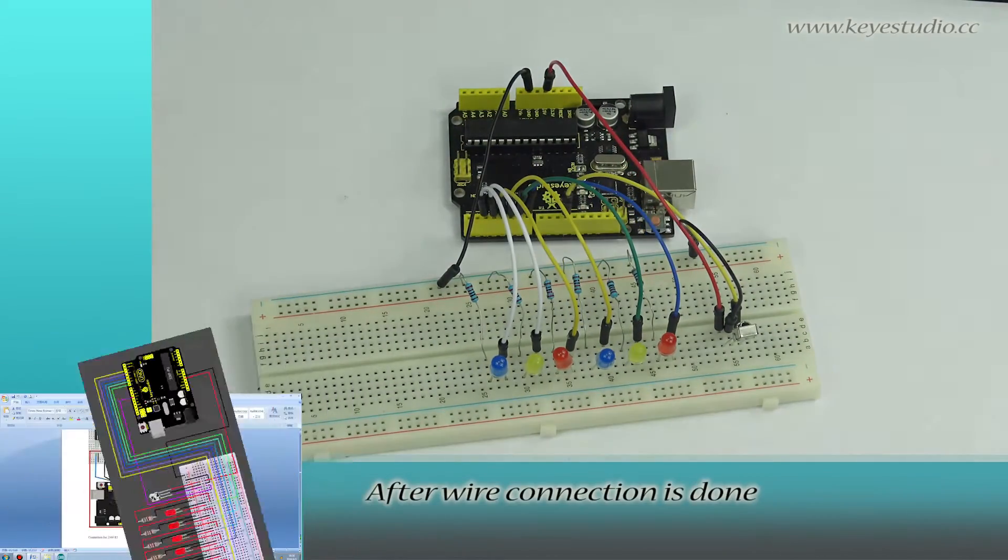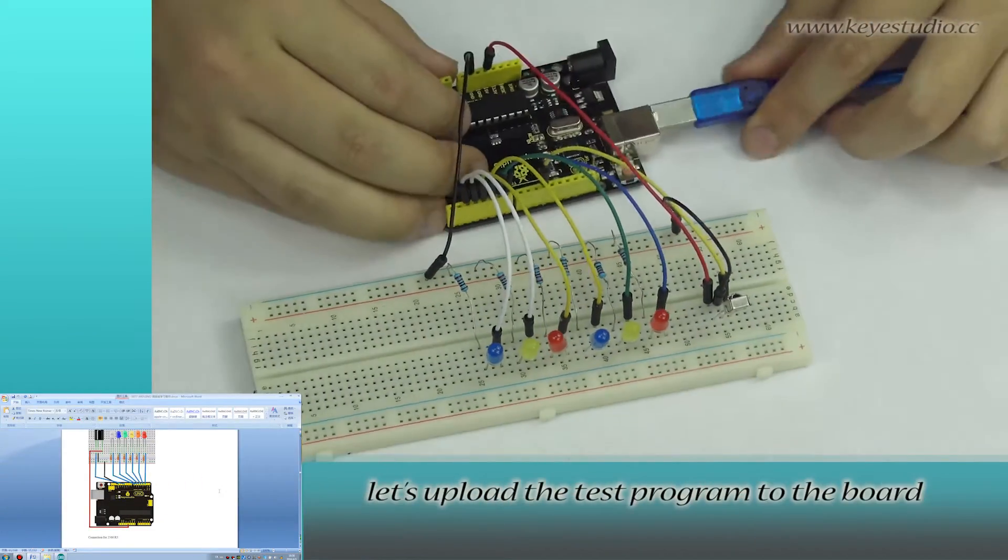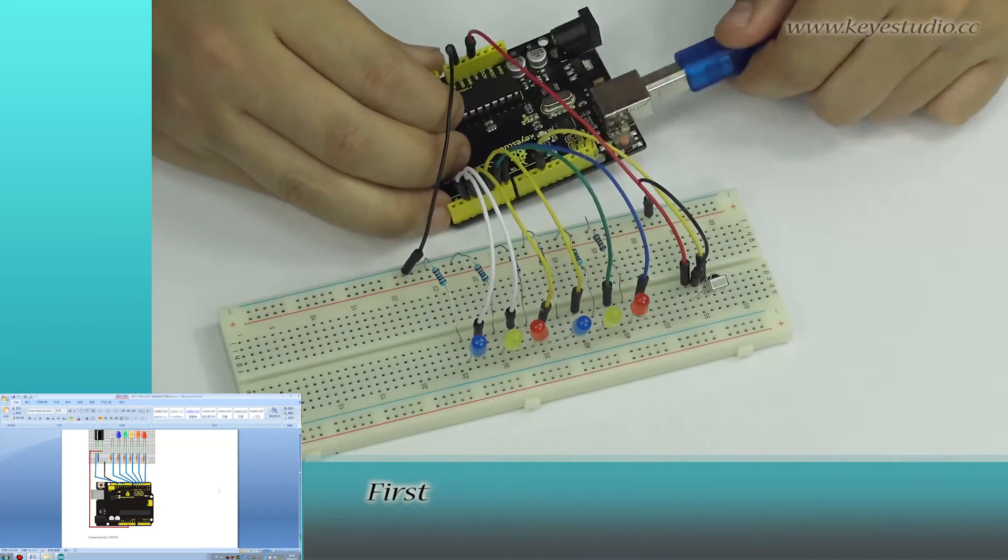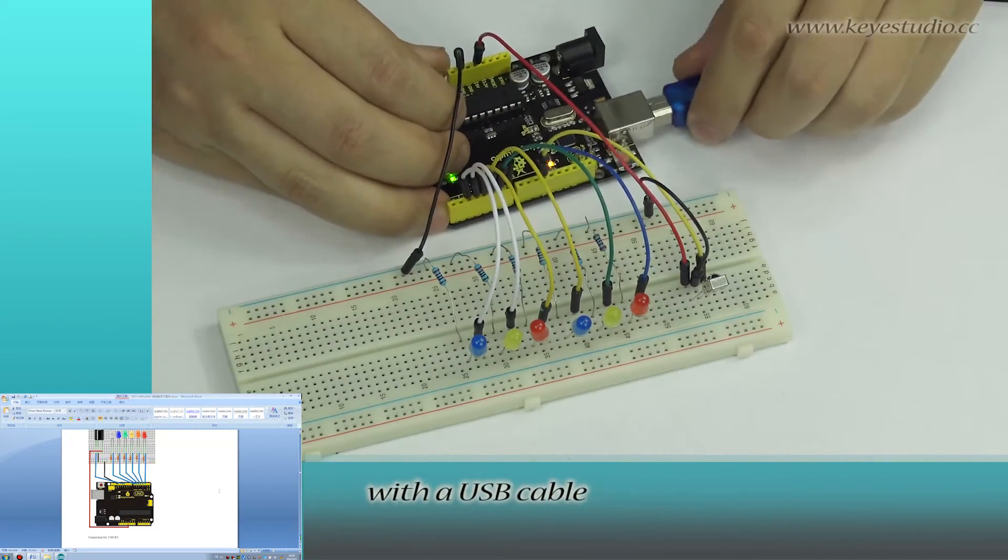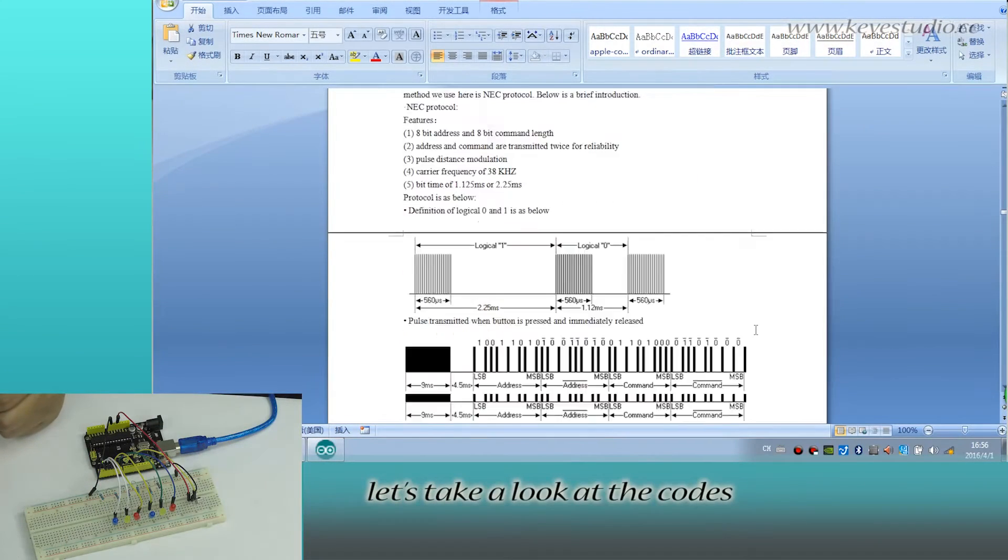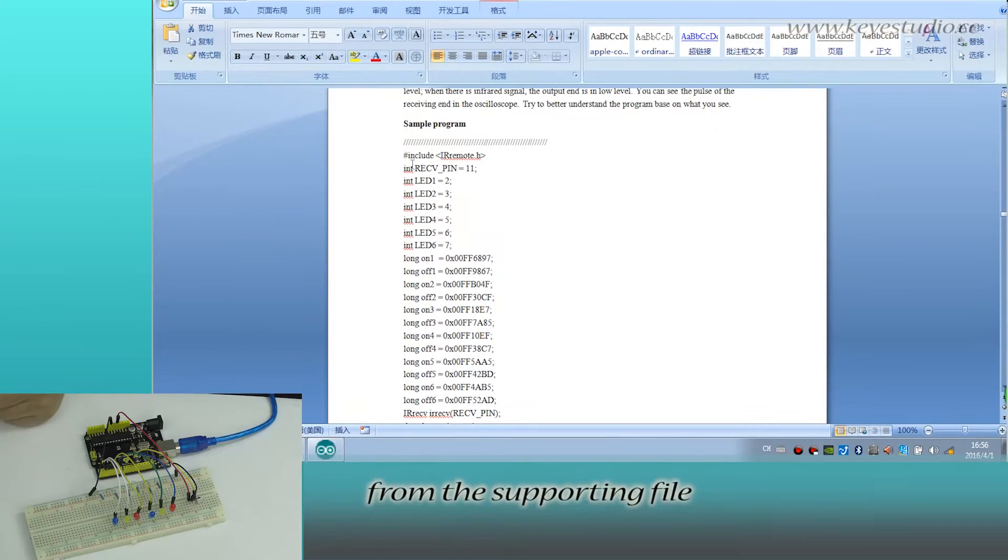After wire connection is done, let's upload the test program to the board. First, connect your Arduino to the computer with a USB cable. Then, let's take a look at the codes from the supporting file.